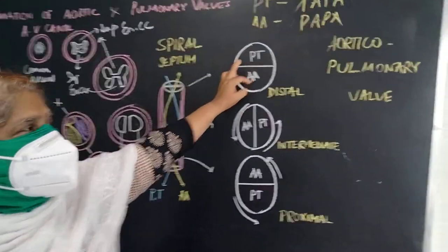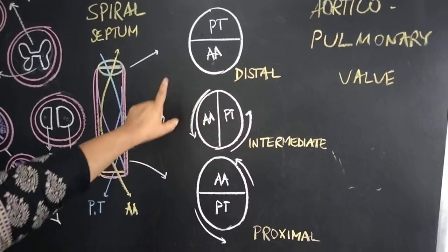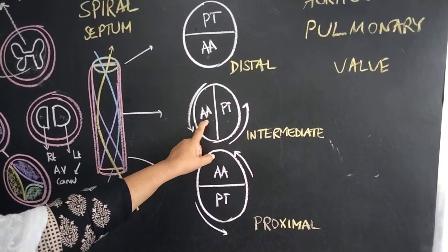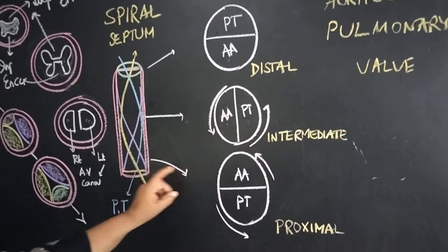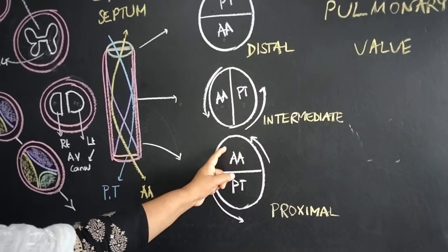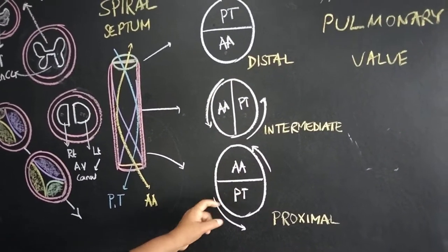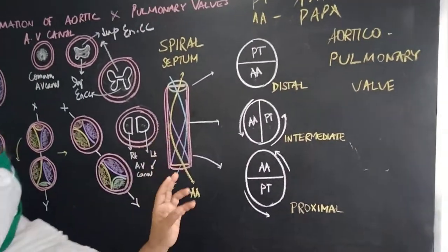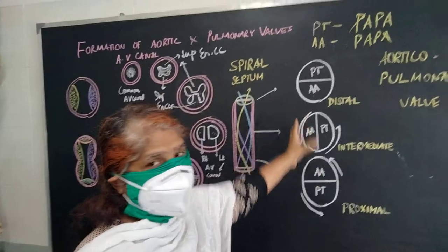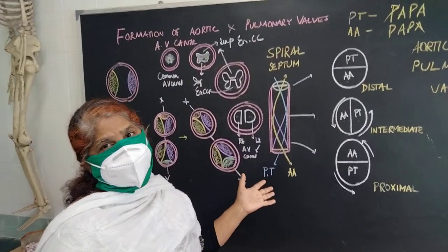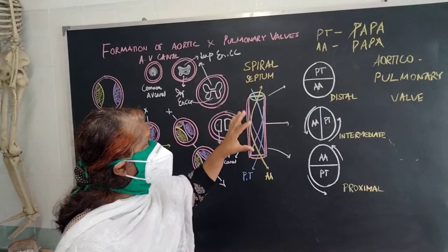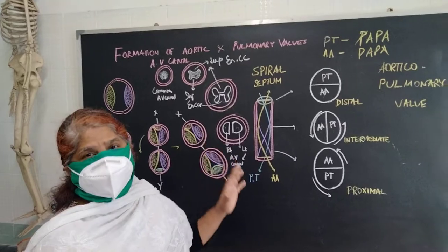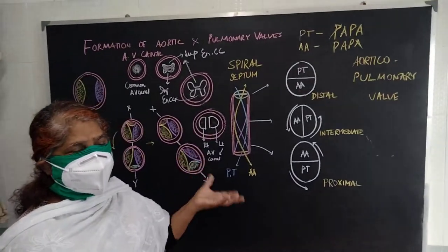This is the spiral septum formed in the conotruncal region. In the distal part, the pulmonary trunk and ascending aorta are present; with anticlockwise rotational movement, they become side by side in the intermediate portion. In the proximal part, the ascending aorta takes the upper position and the pulmonary trunk the lower. This spiraling of the truncus arteriosus is a very important short-answer topic. You must also prepare how the spiral septum is formed and how many curves are present in the ascending aorta and pulmonary trunk.